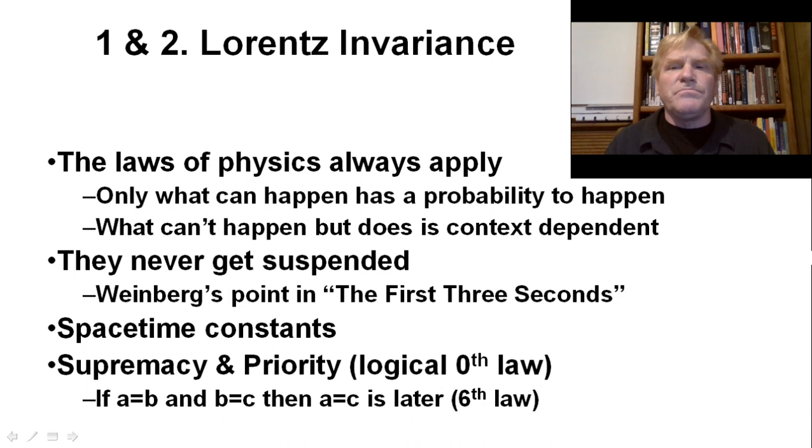First on the list is what should be the zeroth law, as it takes priority over everything. Invariance first says the laws of physics always apply. No exceptions. Every frame of reference doesn't matter. They always apply. Second, by extension, the spacetime constants set relative to context also never change. Third, by there being a zeroth law, there is a priority to the sequence of the laws of physics. This one is very important, as without it, the laws are too rigid for anything to happen. The flexibility boils up from equivalence later in the laws.